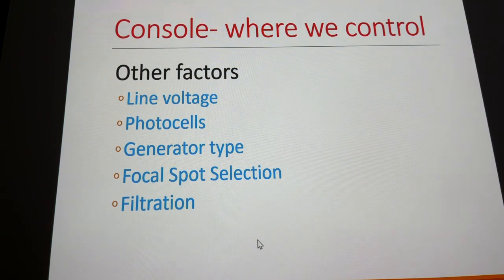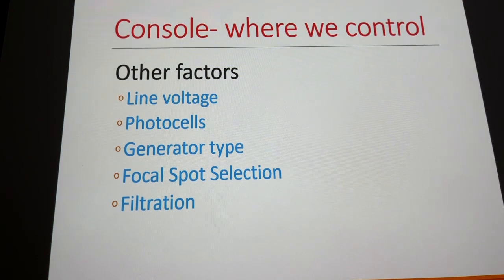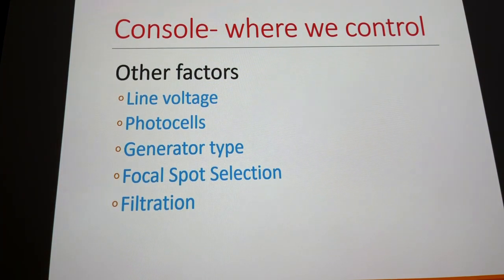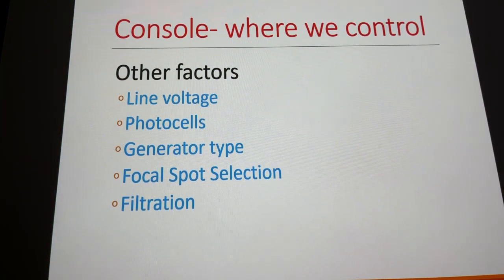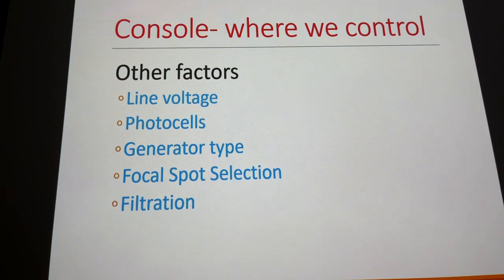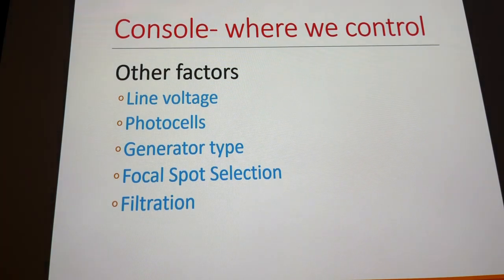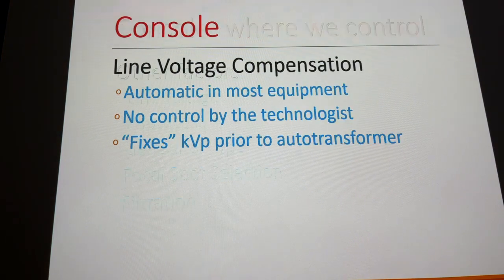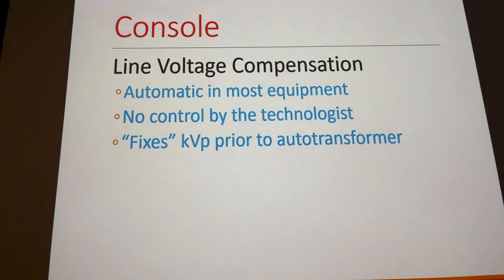Other things we have to consider, even if we don't directly manipulate them, include line voltage compensation, photocell selectors, and generator type — which is set by the machine type we use, not adjustable from the console. Focal spot selection we do control, and filtration in as much as we might use compensating filters to affect a change.